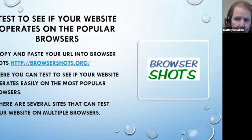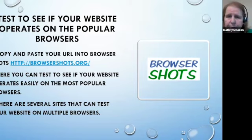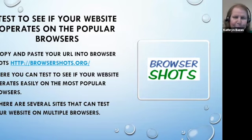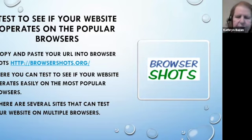Once you get your website up — if you've done a DIY — you do want to copy and paste that URL into your browser. That will allow you to see how your website displays on different browsers. While Google does about 86% of searches out there, there are other browsers that could completely mess up your website if you're not careful.